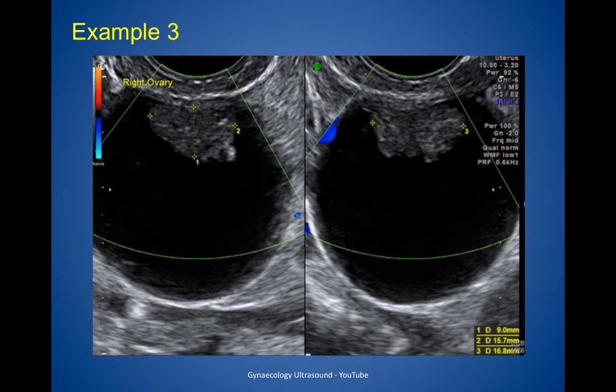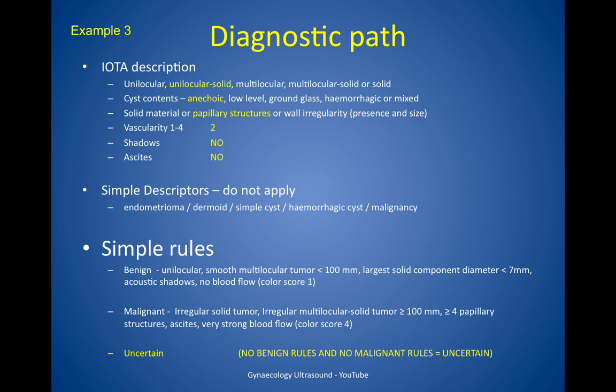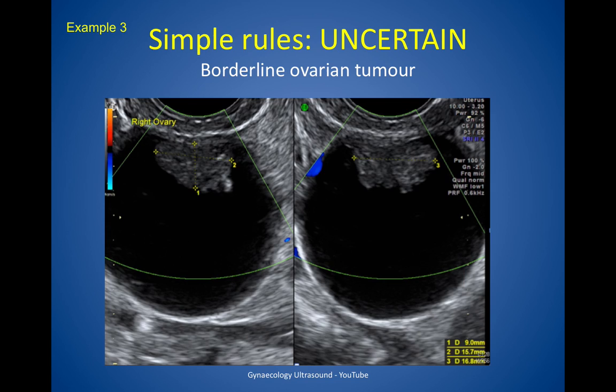Here's another example. In description this is unilocular solid — a unilocular lesion with some solid material — and there was one papillary structure, some vascularity, no shadowing and no ascites. It's not obvious on simple descriptors. On simple rules there are no benign features and no malignant features, so it's uncertain. This was a borderline ovarian tumour.